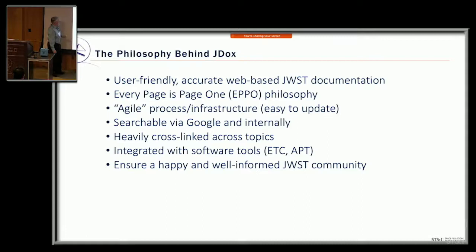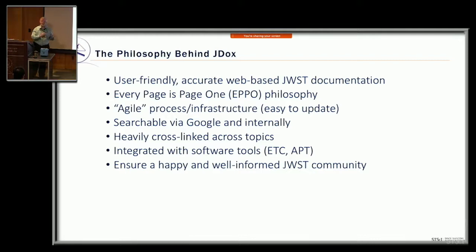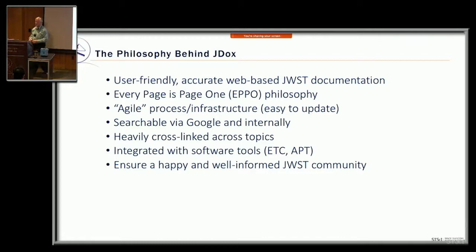You should be able to navigate from within these articles. One thing we've really worked on over the last six months is making sure we have links from within the primary tools directly into JDocs — called context-sensitive help. In APT or the ETC, if you hover over one of the labels and see a little question mark, that means it has help. If you click on that tag, it will send you right into the JDocs article that talks about those topics.